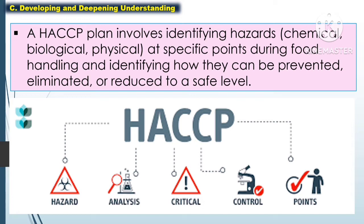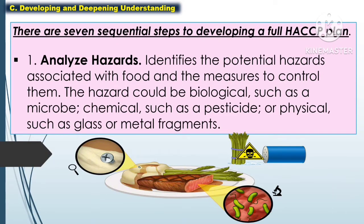identifying hazards such as chemical, biological, and physical at specific points during food handling, and identifying how they can be prevented, eliminated, or reduced to a safe level. There are seven sequential steps to developing a full HACCP plan.